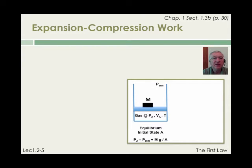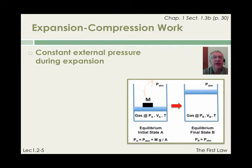We can trigger the expansion of the gas by quickly removing the mass m from the top of the piston. The gas will now expand and its pressure will decrease until a new equilibrium state is reached. This occurs at state b, where the pressure p sub b is equal to the atmospheric pressure.